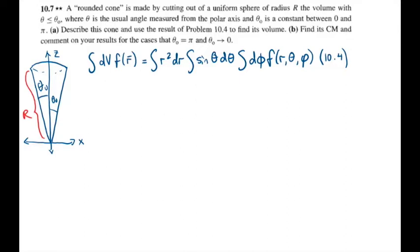In this video, I'll be solving problem 10.7 from Taylor's Classical Mechanics. The problem reads: a rounded cone is made by cutting out of a uniform sphere of radius R the volume with theta less than or equal to theta naught, where theta is the usual angle measured from the polar axis and theta naught is a constant between zero and pi.